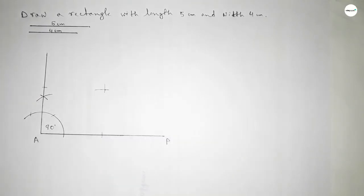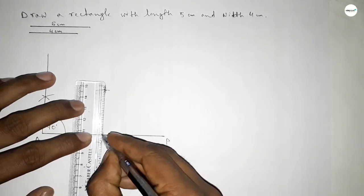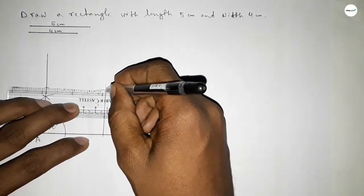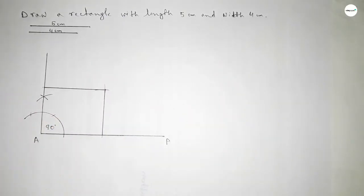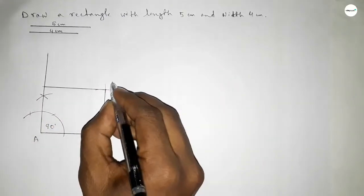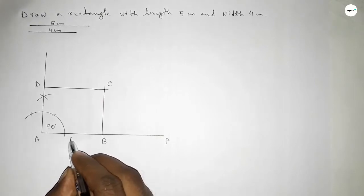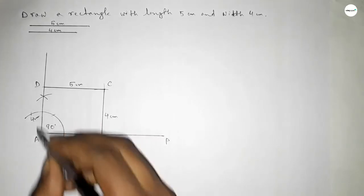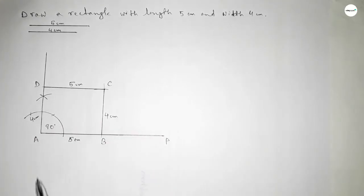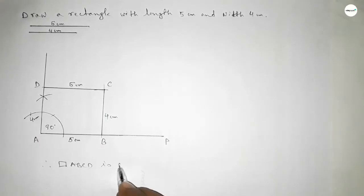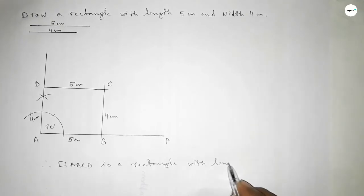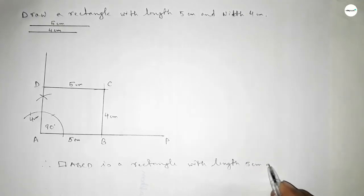Both curves intersect at a point. Now joining this side and joining this side to get a rectangle. Labeling the vertices as B, C, and D. This side is 5 centimeters, this side is 4 centimeters, this side is 5 centimeters, and this side is 4 centimeters. Therefore rectangle ABCD is a rectangle with length 5 centimeters and width 4 centimeters.